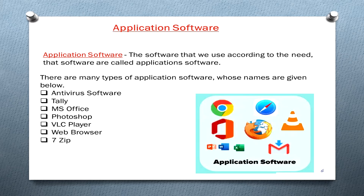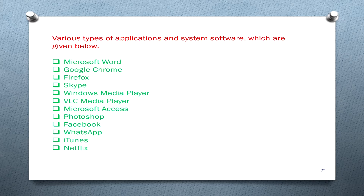Application software is the software that we use according to our needs. There are many types of application software, including antivirus, MS Office, Photoshop, VLC, web browser, and ZIP utilities.